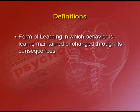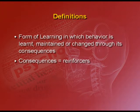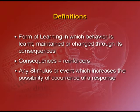So now you see what operant conditioning is — how Skinner established this concept and how we apply it in our day to day lives. The form of learning in which behavior is learned, maintained, or changed through its consequences is operant conditioning. These consequences are known as reinforcers — any stimulus or event which increases the possibility of occurrence of a desired response is a reinforcer. It is also called instrumental conditioning because the organism is instrumental in getting the consequences or reinforcers given to it.